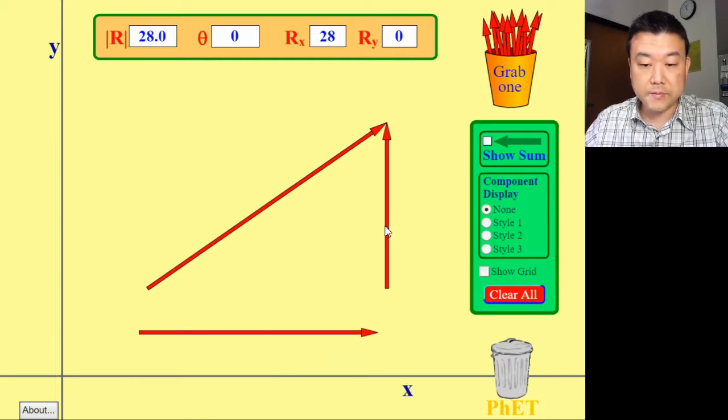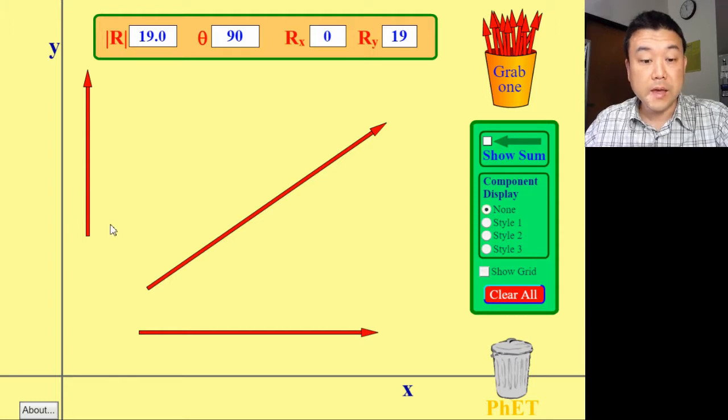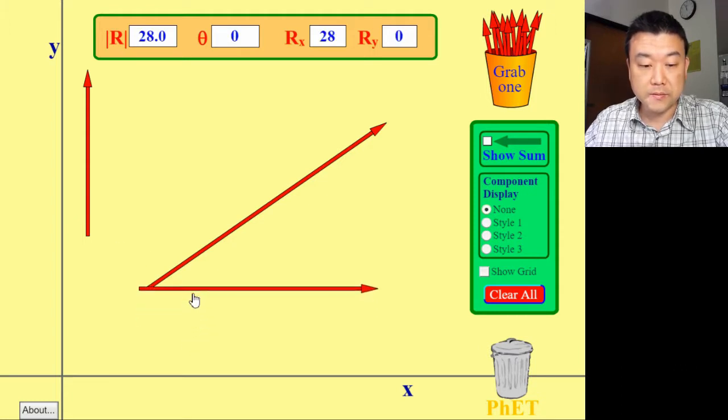This vector here is parallel to the x-axis, and this vector here is parallel to the y-axis. And you can see that adding this vector that's parallel to the x-axis to the vector that's parallel to the y-axis gives you this whole vector here.